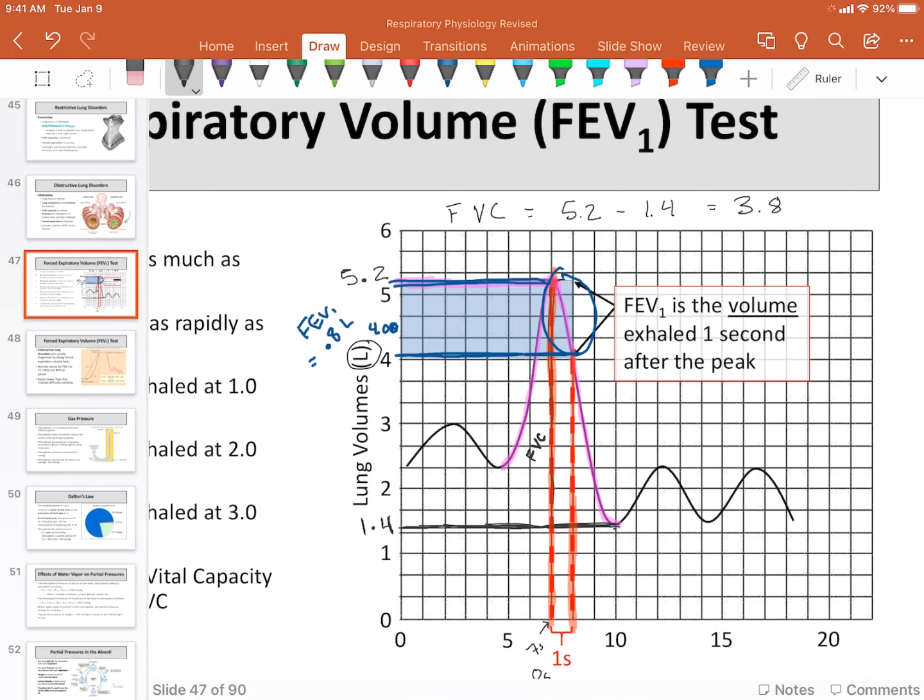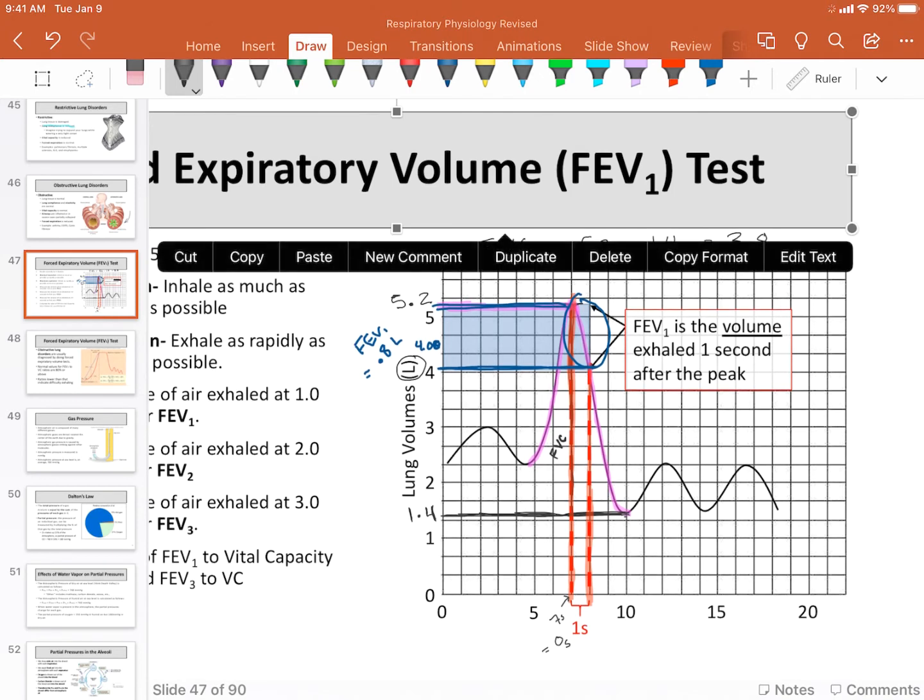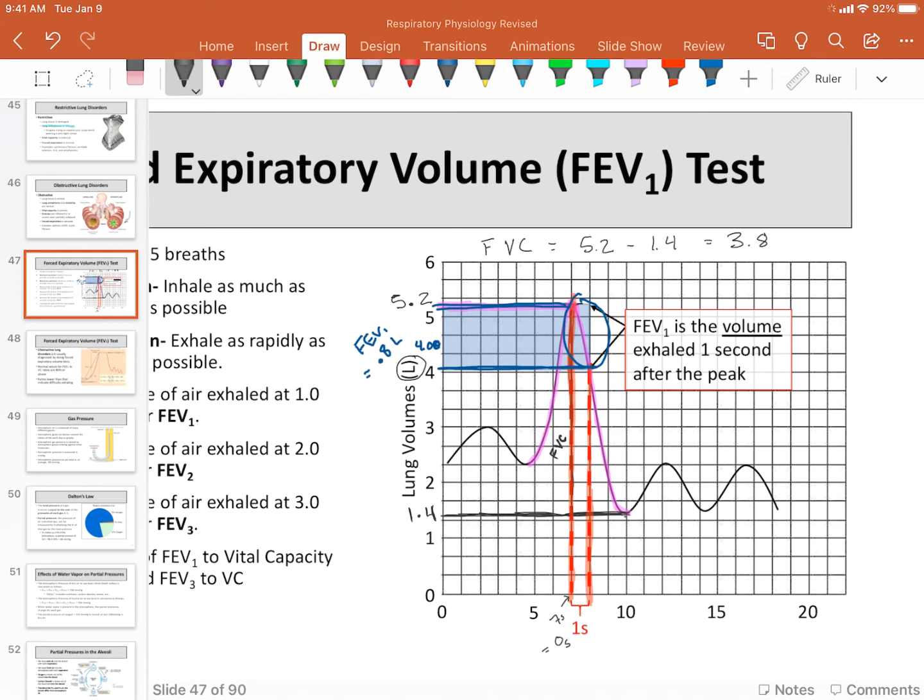Now what you do with these two values is a little bit of math. You're going to take your forced expiratory volume at one second. So my forced expiratory volume at one second would be 0.8 liters. And I'm going to divide that to get a ratio by my forced vital capacity. And then of course you multiply that by 100 to get a percentage. So 0.8 divided by 3.8 equals times 100, 21%. So my forced expiratory volume in this made up experiment or this made up example is 21%.